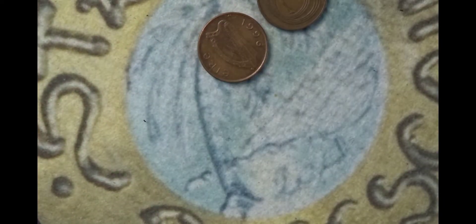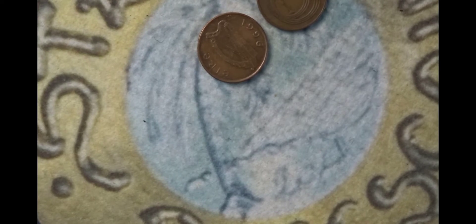Next we have two coins from Ireland. We have one penny, they're both one pennies. One is from 1996, the other one is from 1971.